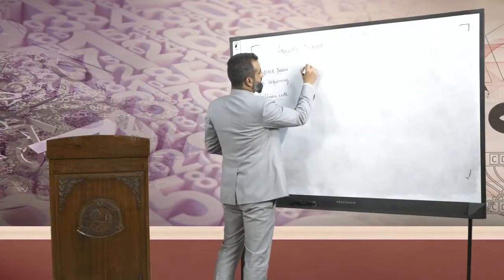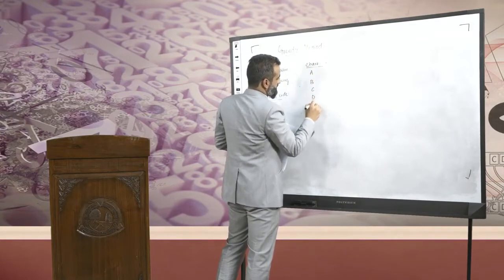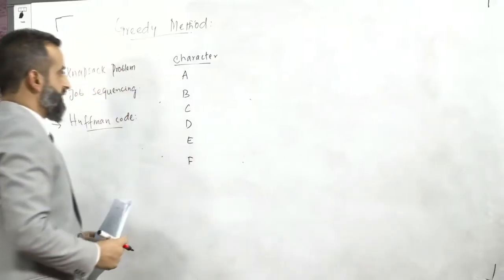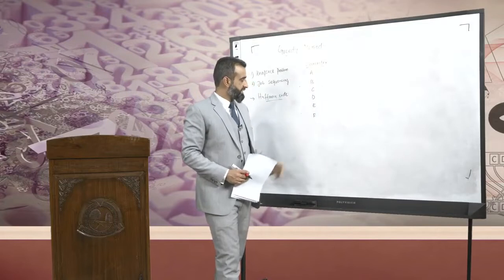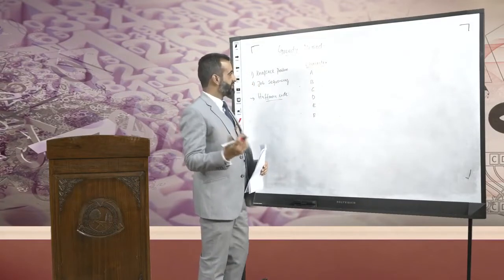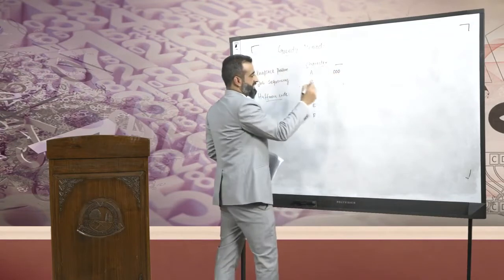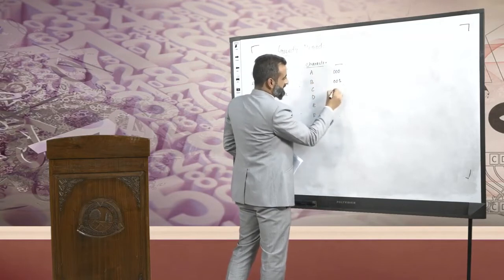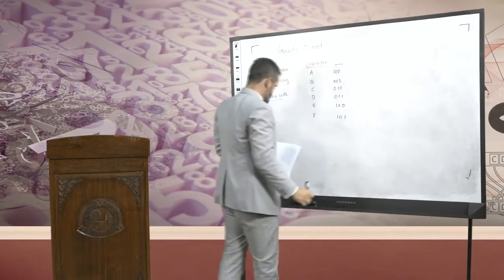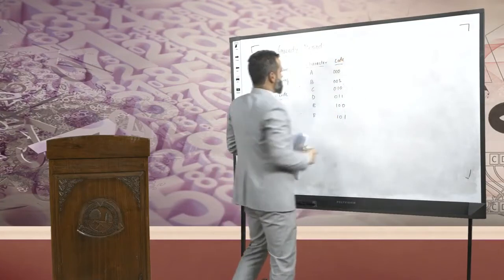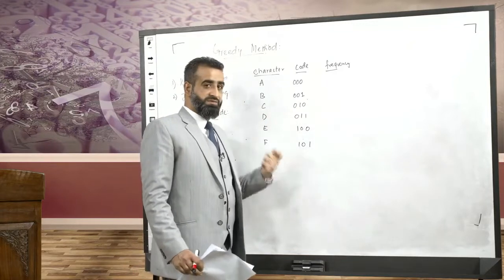Let's assume these are the different characters in my text or message: character A, B, C, D, E, and F. What we just saw is that ASCII makes use of 8 bits to represent these characters. Let's take an example where I'll be representing them by only 3 bits. Frequency means how many times each of these characters appears in the message.